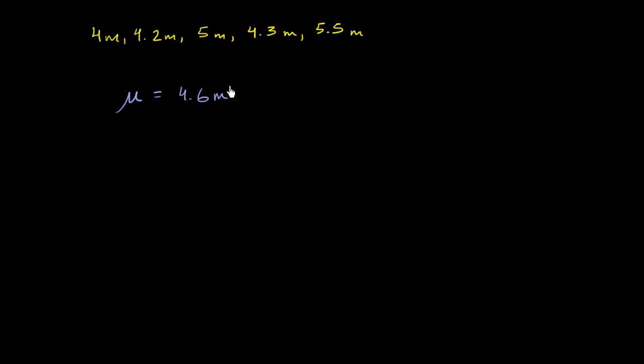That's the measure of central tendency. Now we might also be curious about how dispersed the data is, especially from that central tendency. We already have a tool at our disposal: the population variance. The population variance is one of many ways of measuring dispersion. It has neat properties — it's defined as the mean of the squared distances from the mean. Let's actually calculate the population variance for this population.